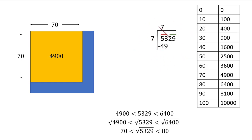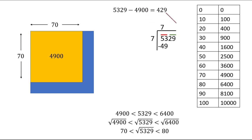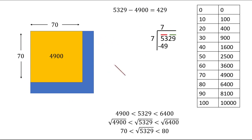In the square root method, we write this as 7×7 = 49. The difference between 5329 and 4900 is 429, so the area of the remaining blue part is 429 — because this entire area was 5329, we took away the yellow part which is 4900, leaving a remaining portion of 429.